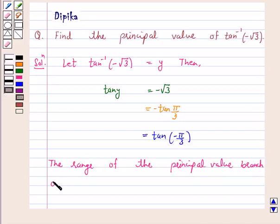of tan inverse is the open interval minus pi by 2 to pi by 2, and tan of minus pi by 3 equals minus root 3.